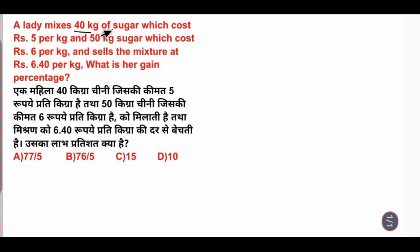He mixed 40 kg sugar which cost rupees 5 per kg and 50 kg sugar which cost rupees 6 per kg, and sells the mixture at 6.40 per kg. What is the gain percent?